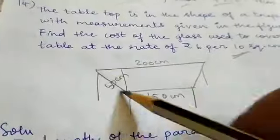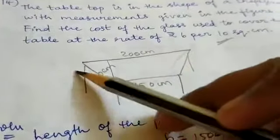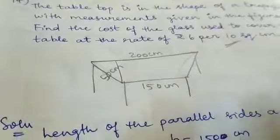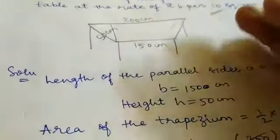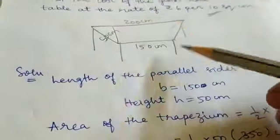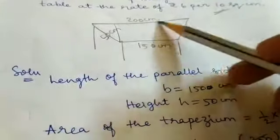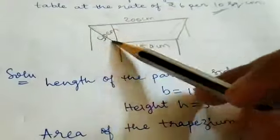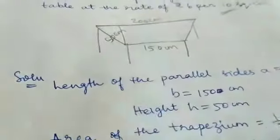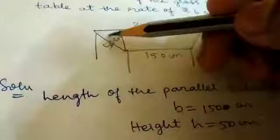This is a table with a glass piece. There is a rate. First of all, for a trapezium we need the area and sides. The parallel sides are 200 cm and 150 cm. The height is 50 cm.